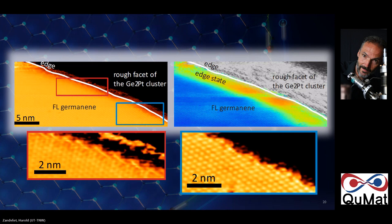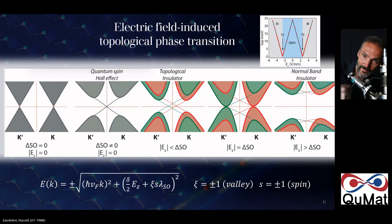Zooming in on one of the edges reveals a hexagonal structure where edges are not perfectly straight, but despite this, the differential conductivity shows a well-defined edge state that does not strongly depend on the exact orientation of the edge. The edge type matters: zigzag edges show a very well-defined sharp peak, while armchair edges give a much flatter response, due to different Fermi velocities in those projections.